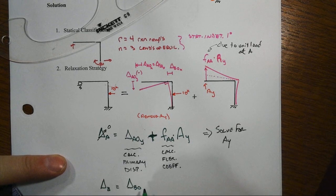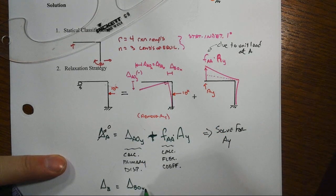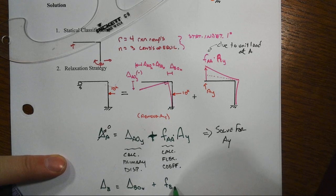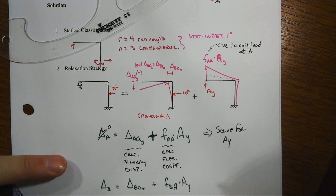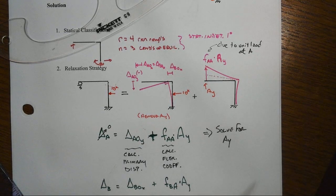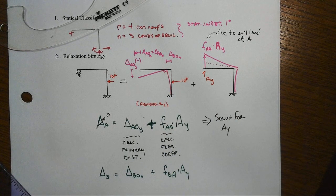Or if our goal is to find ultimately delta B, notice something else will be true: that our delta B in the final case will be equal to whatever it was in the primary case plus whatever it is at B due to the unit load at A times that reaction. And so we could really get it straight from there if that's what our final real goal is without actually having to find all the other reaction quantities.